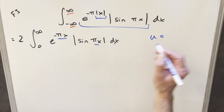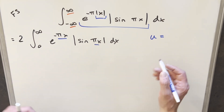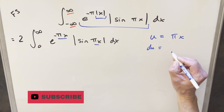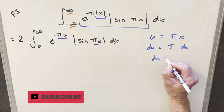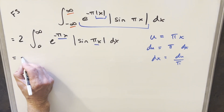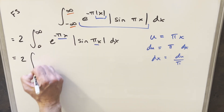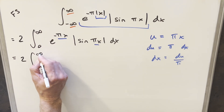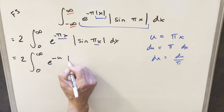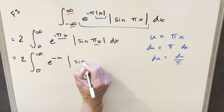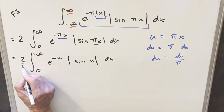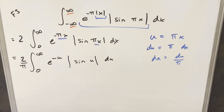With u = πx, we get du = π dx, so dx = du/π. The bounds don't change: infinity stays infinity and zero stays zero. The integrand becomes e to the minus u times absolute value of sine u, and dx becomes du/π. I'll bring the 1/π out front of the integral. So now we have 2/π times the integral from zero to infinity of e^(−u) |sin u| du.